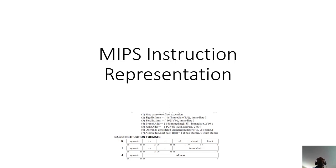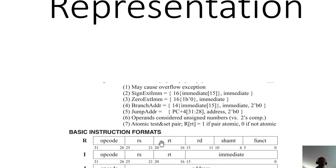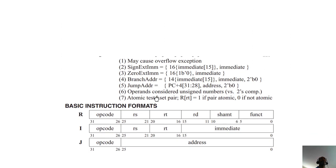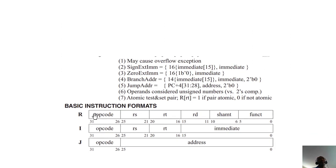Let's spend a few minutes talking about how instructions are represented in MIPS. Every standard instruction can be represented as a series of 32 bits, and those 32-bit instructions will be packaged in one of three basic instruction formats. We've given these formats labels: R format, I format, and J format.